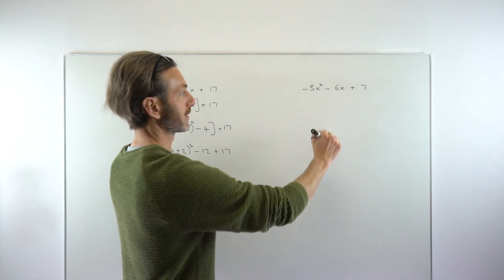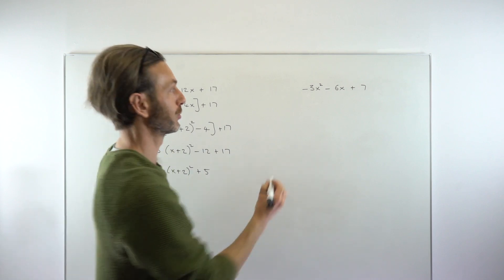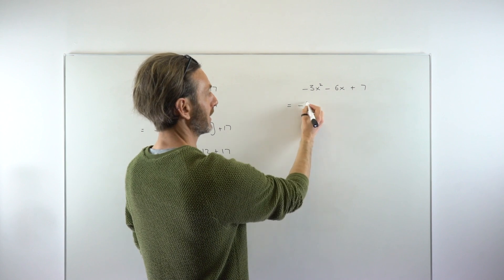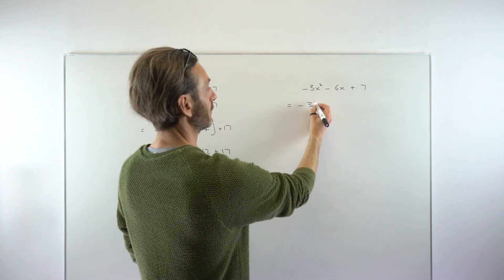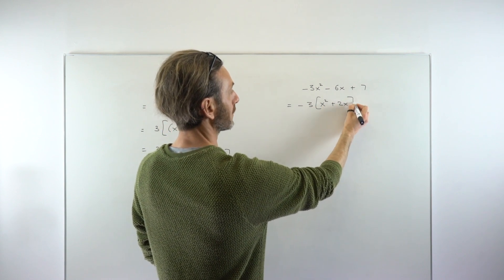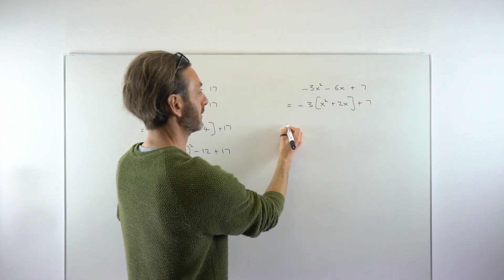I'm just going to run through another example. This one's got a negative 3 in front of the x squared—doesn't really change the process. We're just going to pull out that common factor, which in this case is negative 3. I would recommend using the negative: negative 3 square bracket x squared plus 2x plus 7.